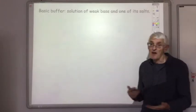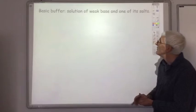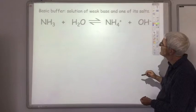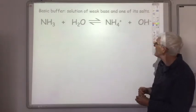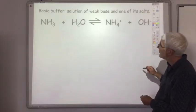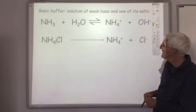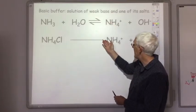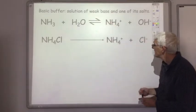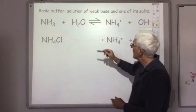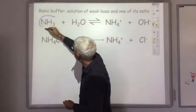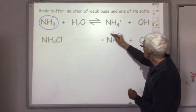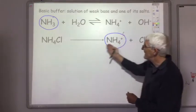Very similar idea if you want to make up a basic buffer system: use a weak base and one of its salts. For example, ammonia is our favorite weak base and one of its salts, ammonium chloride. This partially dissociates, while this completely ionizes in water. So in this system, you've got loads of the NH3 because very few of those molecules dissociate, and we've got loads of the NH4+ provided by the salt.